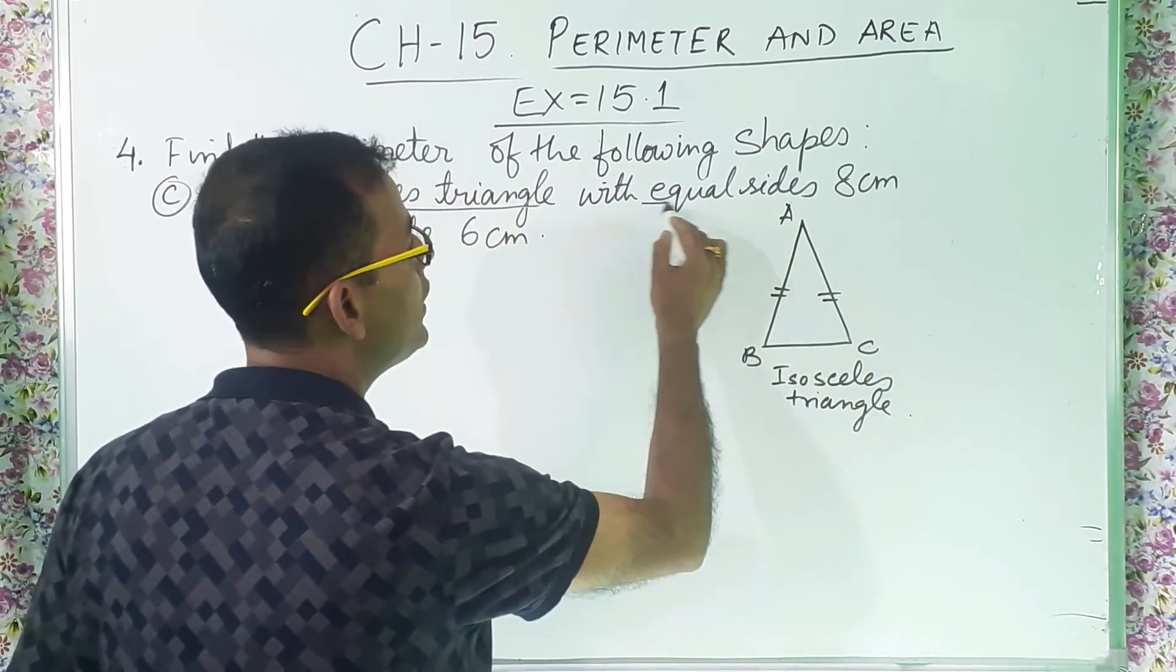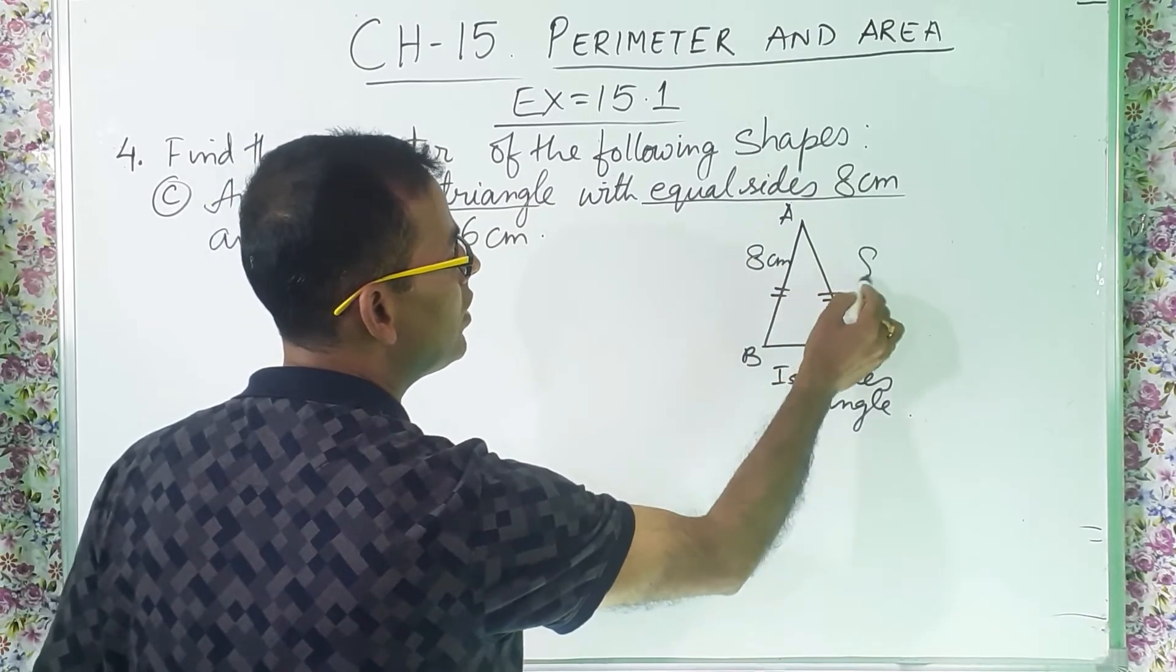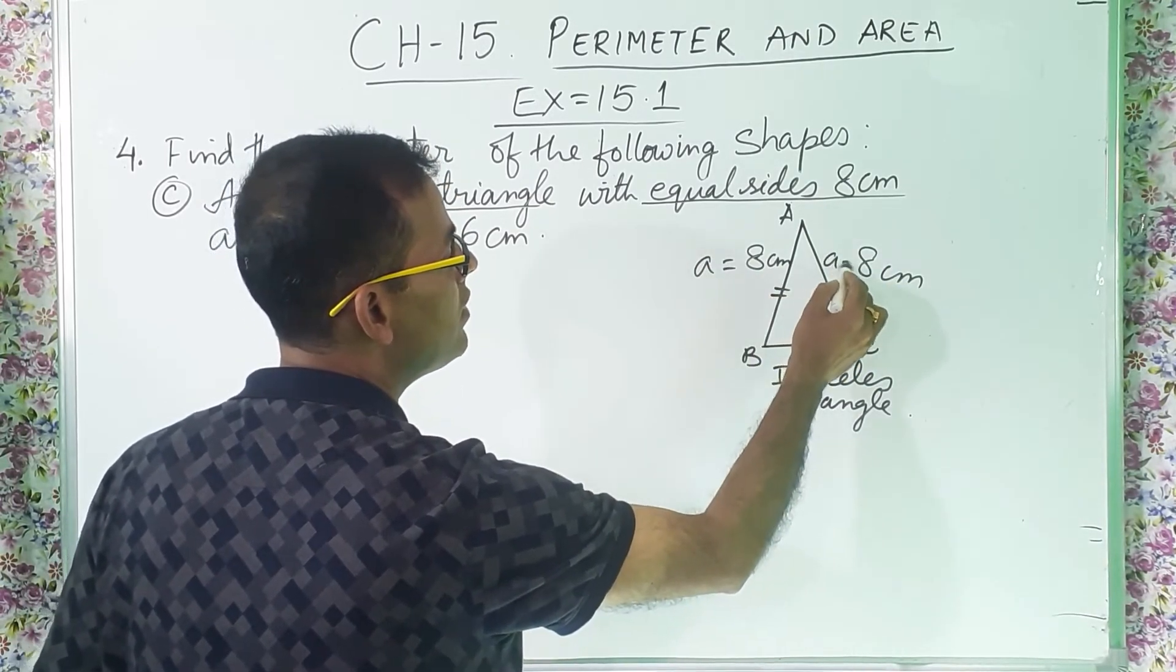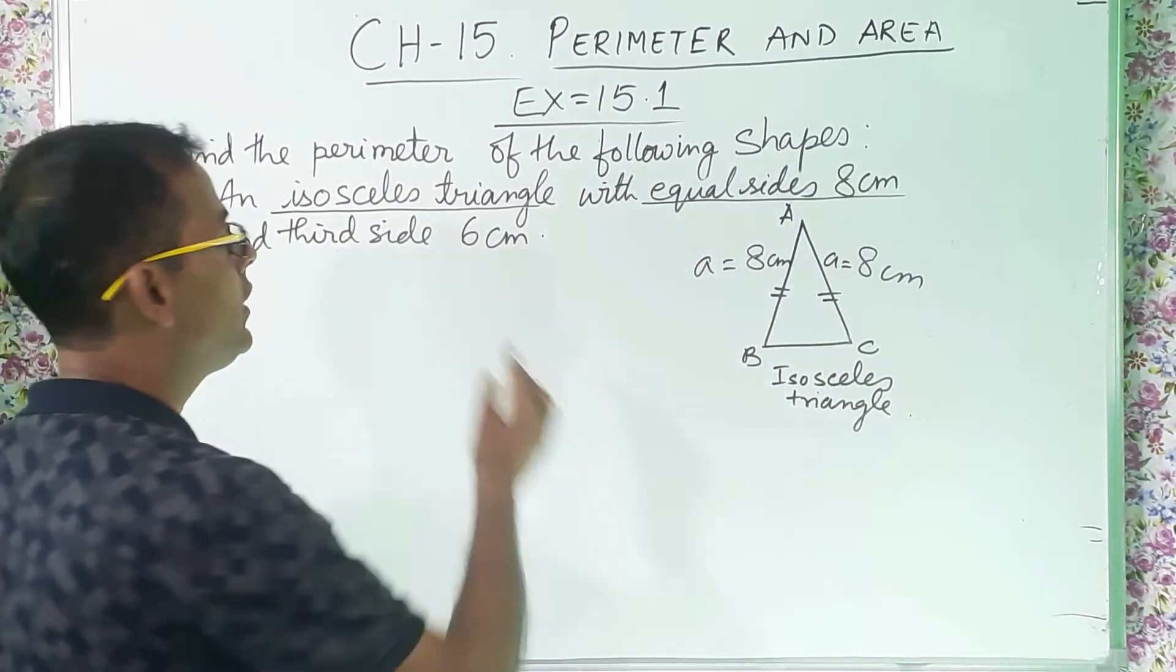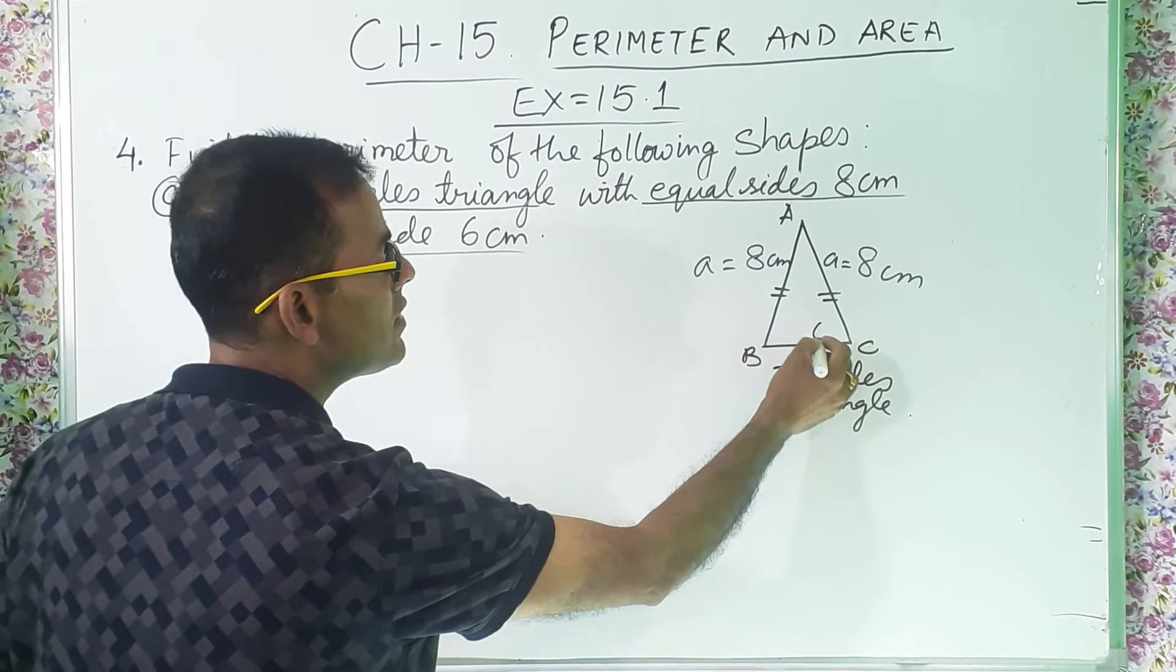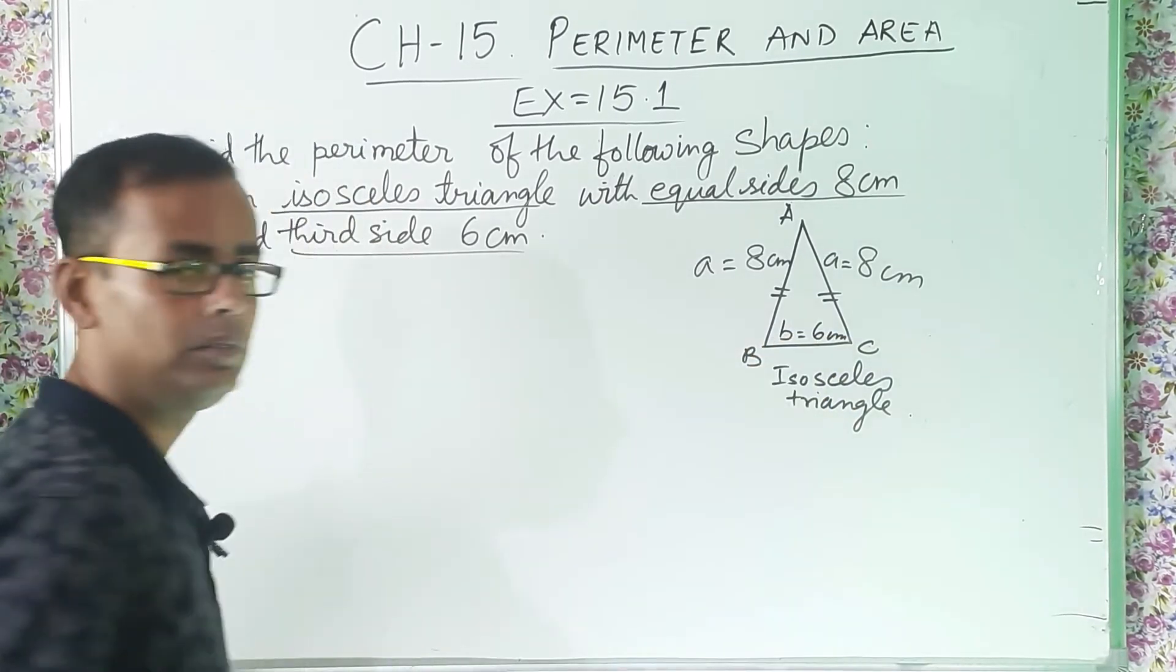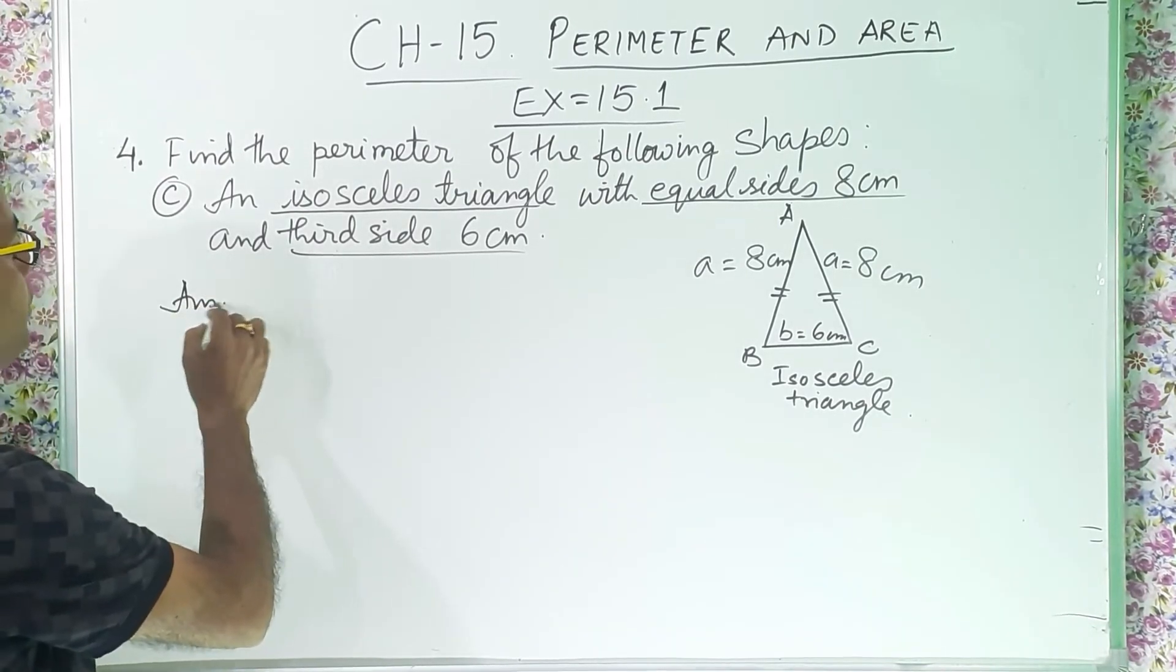And what they have told? Equal sides 8 centimeter. That means this is 8 centimeter, this is also 8 centimeter. So if this is small a, then this is also small a. So here both are equal. And the third side, third side is what? 6 centimeter. So which is remaining? This one is 6 centimeter. So this one I will write here b.